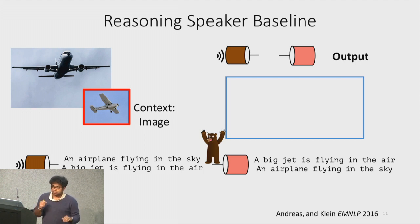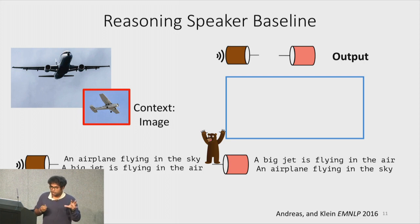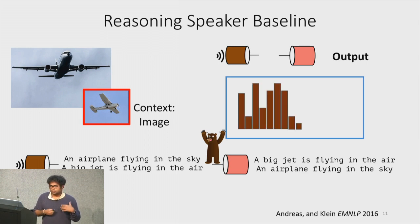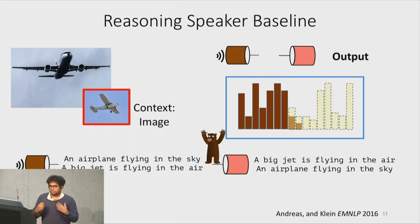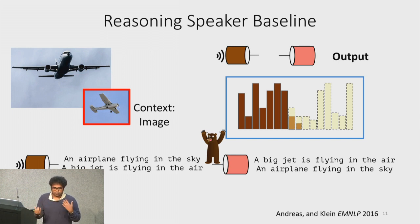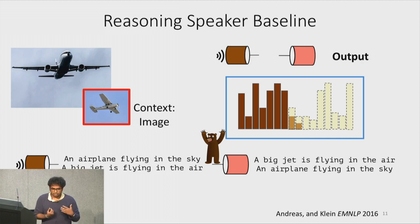In this propose-and-re-rank pipeline, a captioning model generates multiple utterances that get re-ranked by a listener. The bottleneck tends to be the proposal distribution. If you think about the context-agnostic distribution of utterances versus the true discriminative sentence distribution, and there's not enough overlap between them, you'd need to draw a lot of samples to get one that's actually under the discriminative distribution. The proposal distribution becomes crucial and often a bottleneck to performance.